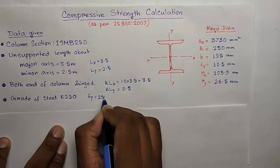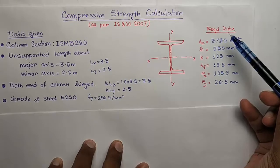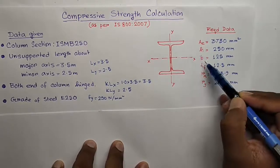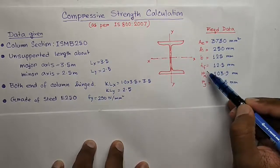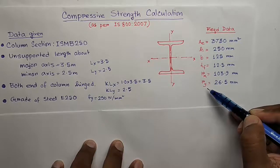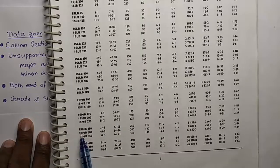The effective length and the grade of steel is given here E 250, so Fy equal to 250 Newton per millimeter square. And these are the required data to do the calculation: the sectional area, height of the section, width of flange, thickness of flange, and the radius of gyration about X and Y axis. I have taken this data from SP6 table 1 for ISMB 250.